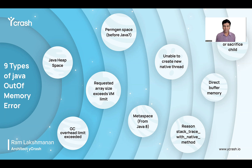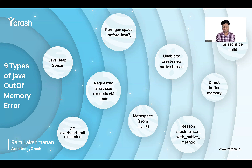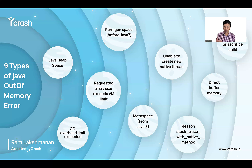We have this webinar series on a monthly basis. I'm Ram Lakshmanan, the architect of the Ycrash product suite. In today's talk, we are going to be discussing about nine different types of out of memory errors. There are nine different planets in the solar system, and certain cultures believe the planets' positions influence your mind and body. I'm hoping this talk will influence how you go about debugging, diagnosing, and identifying the root cause whenever you confront an out of memory error.